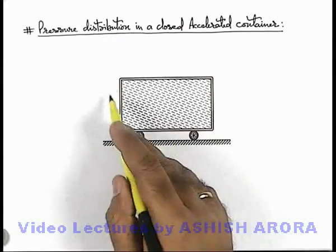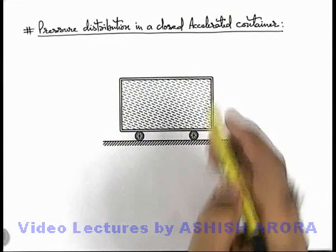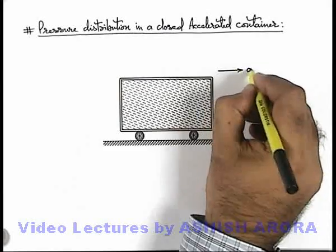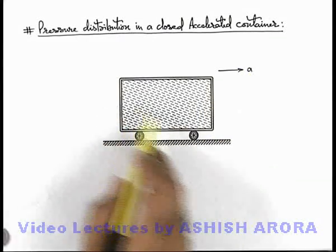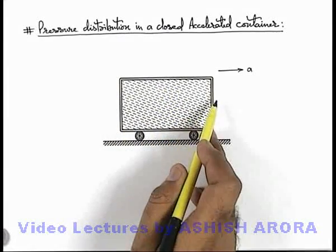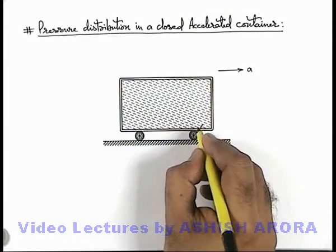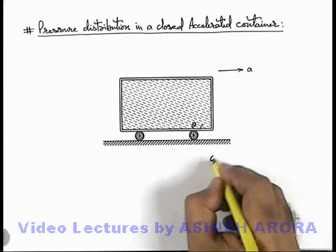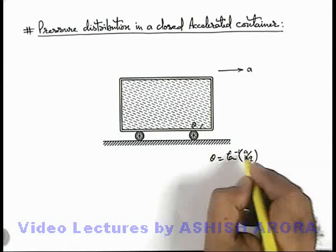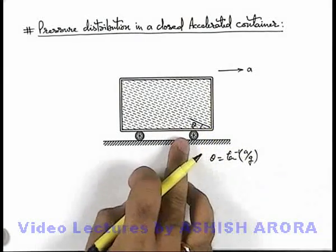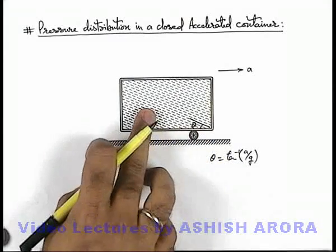Say if we are having a completely closed container which is enclosing a fluid, and the container is accelerating with an acceleration ay. Here we can say all the layers of fluid will incline to the horizontal with the same angle theta, which is given as tan inverse of ay by g, which we have earlier calculated. This is the angle which all the layers will make with the horizontal within the fluid.